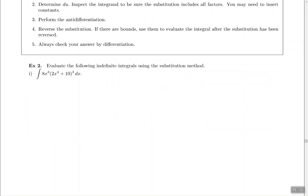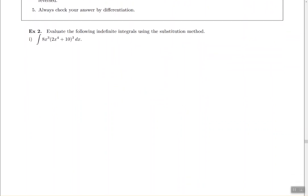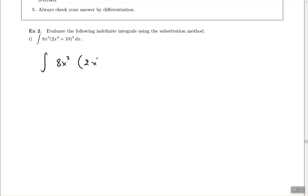Let me show you how it works by looking at example two. Example two says: find the antiderivative of 8x³ times (2x⁴ + 10)³ dx.